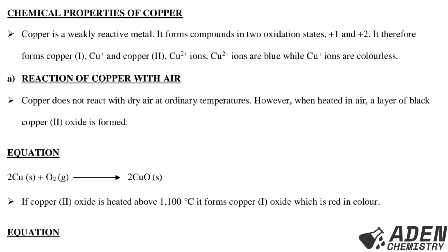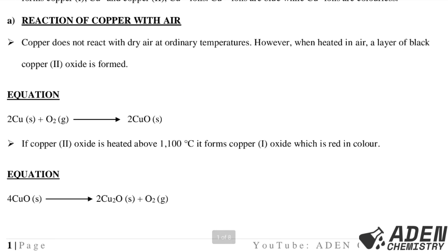Next, let's proceed to the second part of our class today — the chemical properties of copper metal. Copper is a weakly reactive metal. It forms compounds in two oxidation states: copper(I) and copper(II). It therefore forms copper(I) and copper(II) ions. Copper(II) ions are blue while copper(I) ions are colorless.